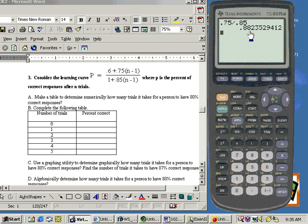That means that no matter how many trials that a person has at this test, they will never reach this percentage of correct responses. They'll get closer and closer to 88.23529% correct, but they'll never quite reach that correct percentage. So that would be the location of the horizontal asymptote.